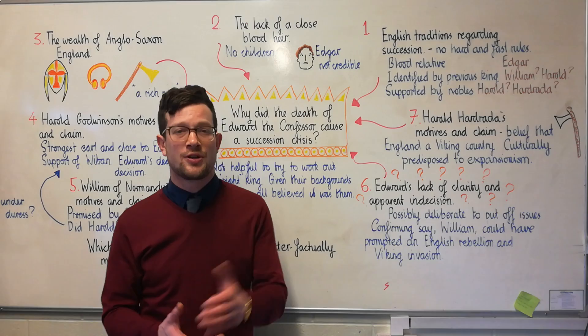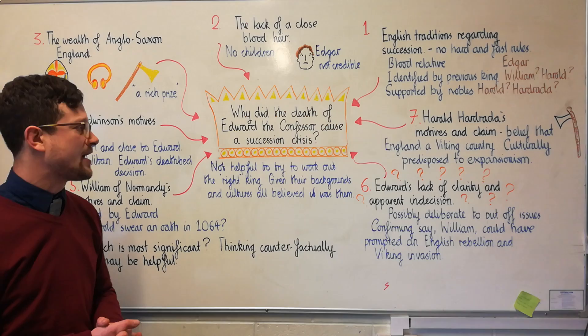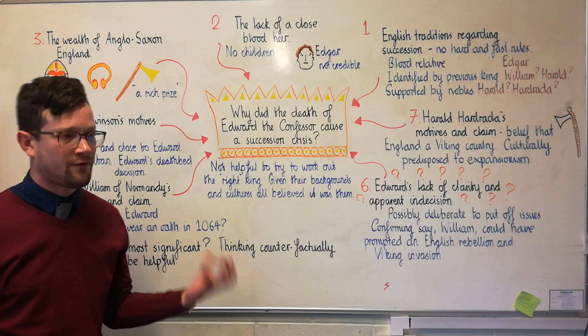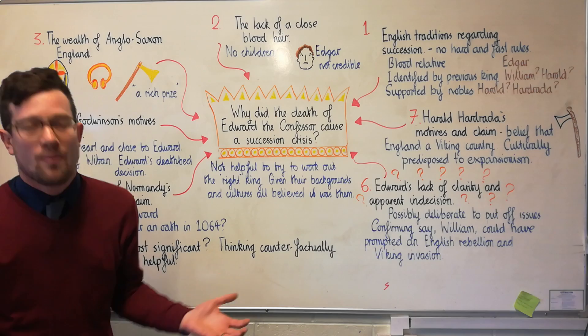Hello and welcome back to Microteaching with Mr Newmark. Today we're looking at this question: why did the death of Edward the Confessor cause a succession crisis in 1066? We're going to work through seven different reasons and when we finish we're going to have a quick play around to try and work out which of these, or which combination of these, was the most significant.